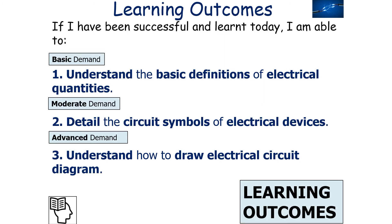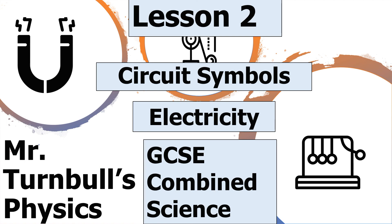I hope you've enjoyed today's lesson. If we've been successful, we can now understand the basic definitions of electrical quantities, detail the circuit symbols of electrical devices, and understand how to draw electrical circuit diagrams. That's today's lesson on circuit symbols, part of the electricity topic in GCSE Combined Science Physics. Have a lovely day.